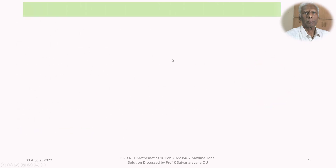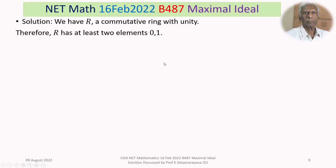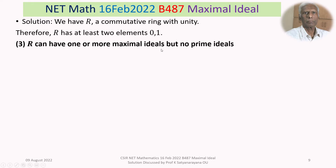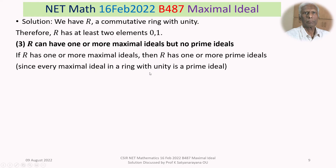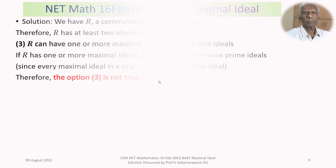Let's move to option 3: R can have one or more maximal ideals but no prime ideals. Is there a situation where R has maximal ideals but no prime ideals? If R has one or more maximal ideals, then R has one or more prime ideals, because every maximal ideal is a prime ideal in a ring with unity — commutativity is not even required. Therefore option 3 is not true.